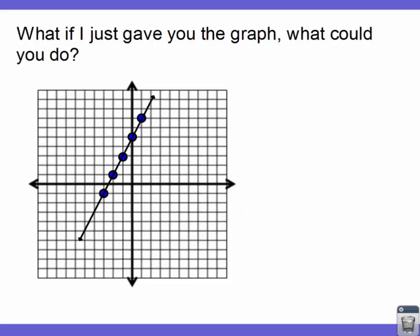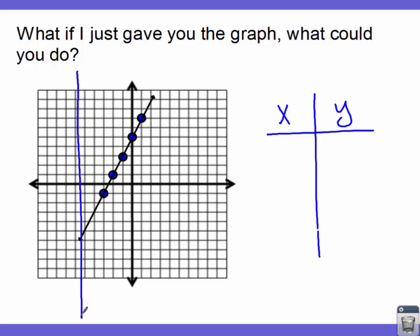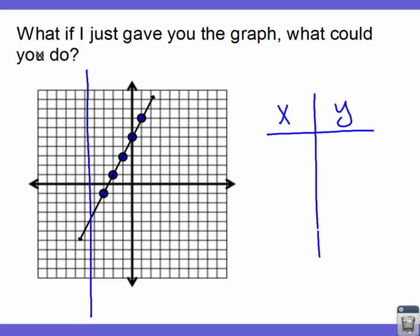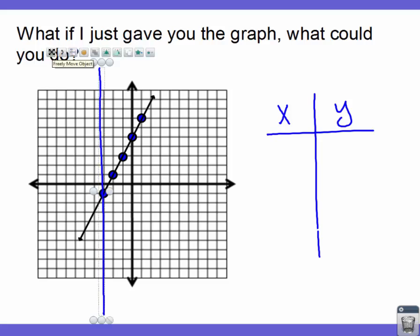So here's our graph. From this graph, you can find a t-chart. When reading a graph, always read it from left to right. Think of drawing a vertical line moving across the graph — the first point it hits is the first point you write down. The coordinate for that first point is negative three, negative one.